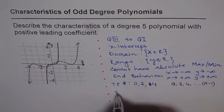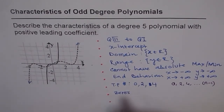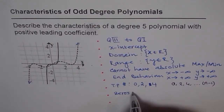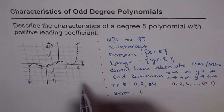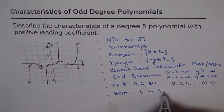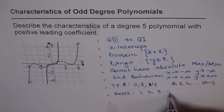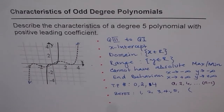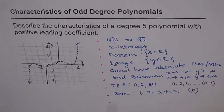Now let's talk about zeros, which are the x-intercepts. The polynomial will definitely have at least one zero, and it can have up to n zeros. For a degree 5 polynomial, the possible numbers of zeros are 1, 2, 3, 4, or 5. In general, the number of zeros for an odd degree polynomial of degree n ranges from 1 to n.